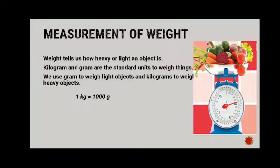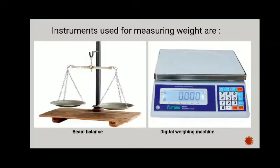Measurement of weight: weight tells us how heavy or light an object is. Kilogram and gram are the standard units to weigh things. We use gram to weigh light objects and kilograms to weigh heavy objects. One kilogram equals one thousand grams.